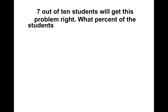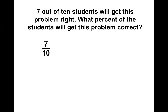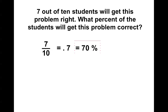So if I tell you 7 out of 10 problems will get this problem right, what percent of the students get the problem correct? Well, 7 out of 10 is a fraction. However, percents are a very special fraction that only have 100 as the denominator. So how can we get to 100 as the denominator? Multiply by 10 and get 70 percent. If you have any questions, please feel free to let me know, and you guys have a great night.